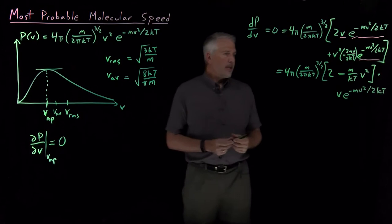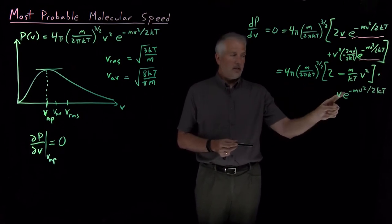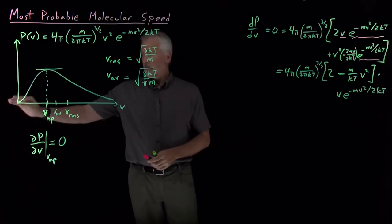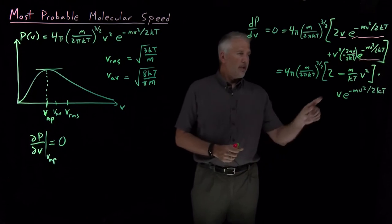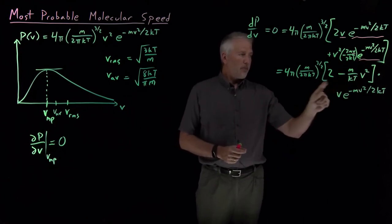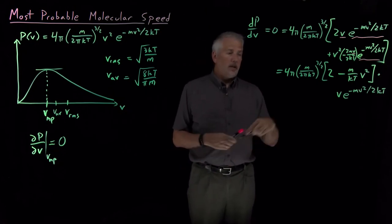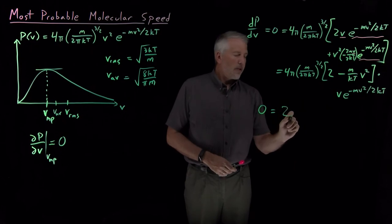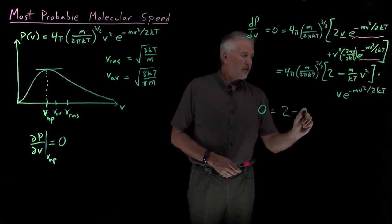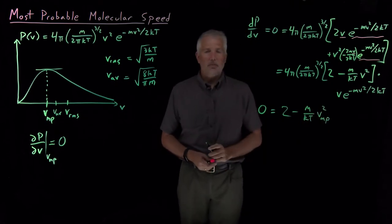And I want that all to be equal to 0. The only way to make that equal to 0, I can't make the constants equal to 0. I could make V equal to 0, so that means the slope of this curve is 0 when I get to V equal to 0. That's not the interesting point. The interesting point is when this term in brackets is equal to 0, and that's going to be the peak of this curve. So we're really looking for the point where 0 is equal to the quantity in brackets, 2 minus (m/kT)V², and when that's true is when we're at the most probable velocity.